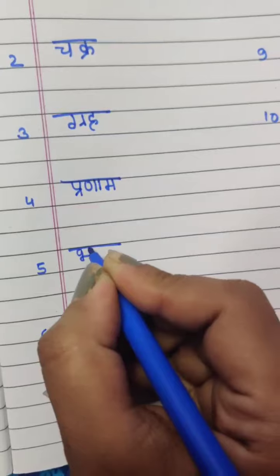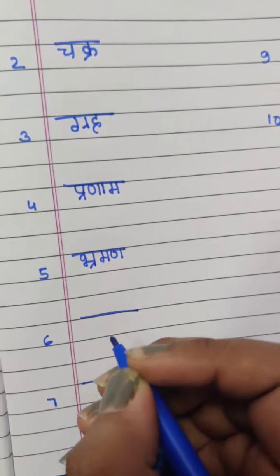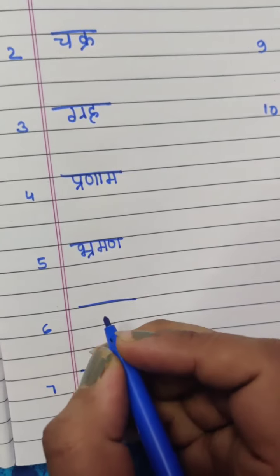And the fifth one, B, B mein Padeen ki matra, Ma, Na, this is Brahman. And the next one,